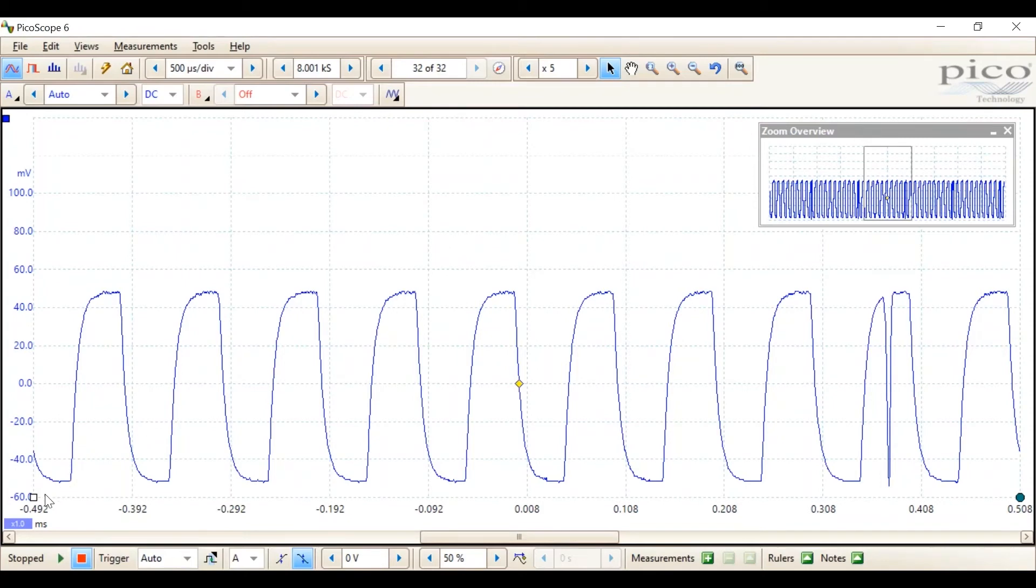Let's put that ruler one there. And then ruler two here. And we can read the delta between the two cursors as being just over 50 microseconds.